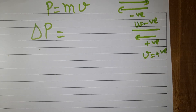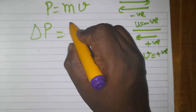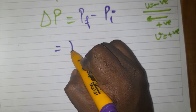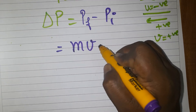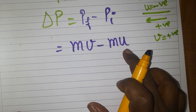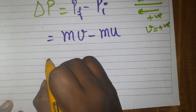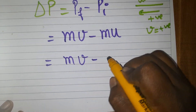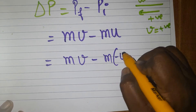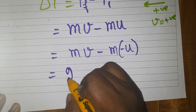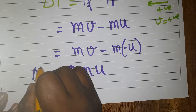Why do we take it like that? Because velocity is a vector quantity. So: momentum final minus momentum initial = M×V − M×(−U). Since initial velocity is taken negative, we get M×V − (−M×U). Both V and U are the same, so minus minus becomes plus: the result is 2MU. This is the change in momentum.